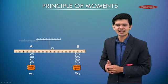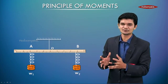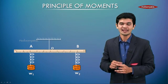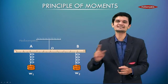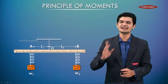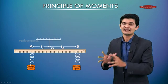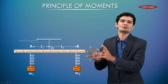So in this condition right now, I've got two weights W1 and W2 acting at two points A and B and their respective distances from the center are L1 and L2. Now in this condition, let us understand the principle of moments over here.